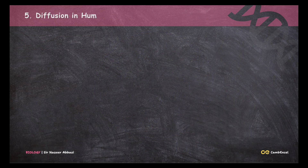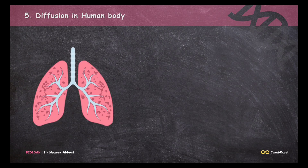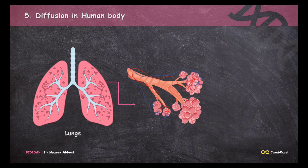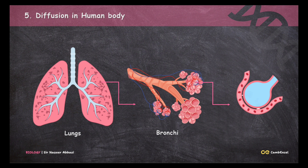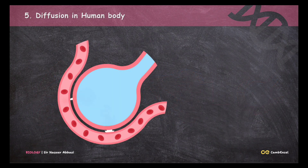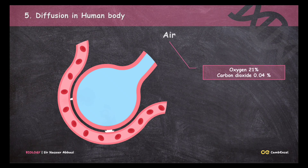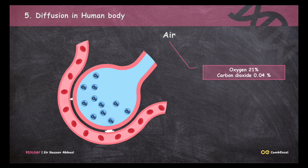Next, we will see how diffusion helps the human body carry out gas exchange. We know that gas exchange occurs in our lungs. The lungs have bronchi, and the bronchi have alveoli, where gas exchange actually happens. The air we breathe in contains 21% oxygen and 0.04% carbon dioxide. When this air reaches the alveolar space, there will be a high concentration of oxygen molecules inside it.